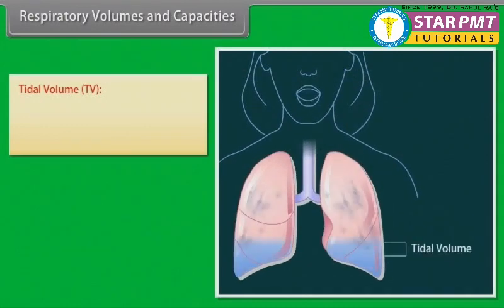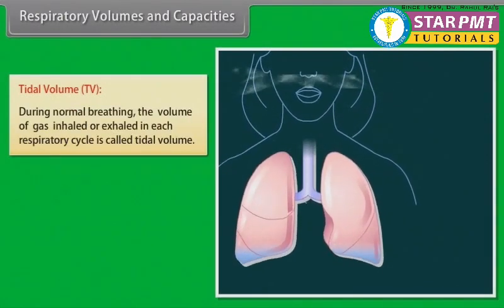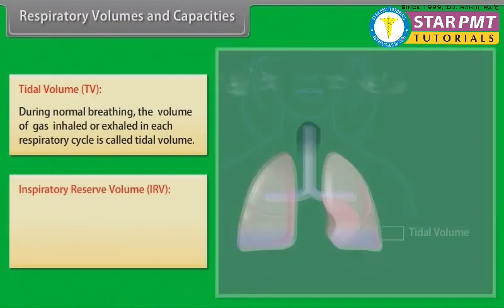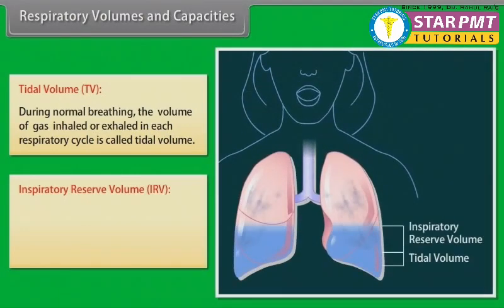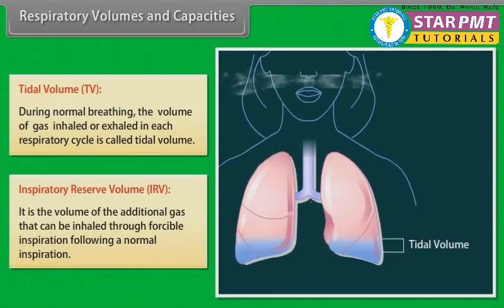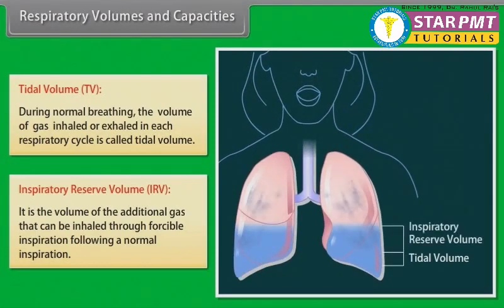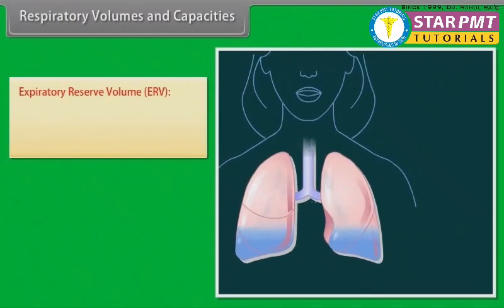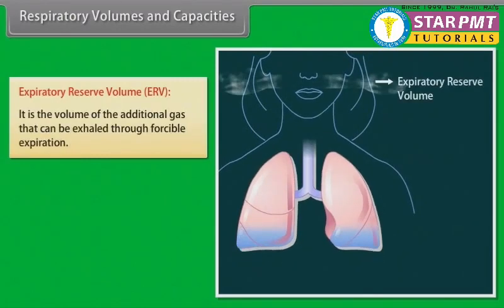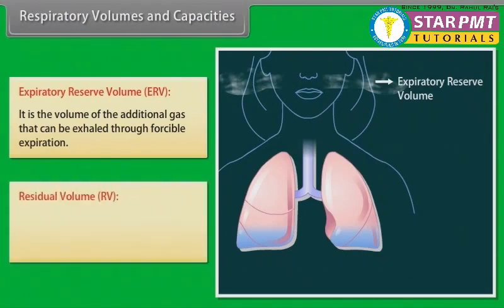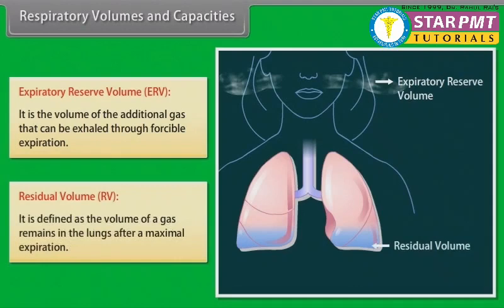Respiratory volumes and capacities. Tidal volume (TV): during normal breathing, the volume of gas inhaled or exhaled in each respiratory cycle is called the tidal volume. Inspiratory reserve volume (IRV): the volume of additional gas that can be inhaled through forcible inspiration following a normal inspiration. Expiratory reserve volume (ERV): the volume of additional gas that can be exhaled through forcible expiration. Residual volume (RV): the volume of gas that remains in the lungs after a maximal expiration.